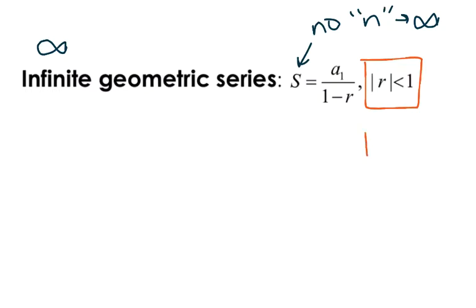So I'm going to tell you, if the absolute value of r, so that means I don't care if it's positive or negative, if that number is not less than 1, then we're going to have no sum. And this is where we get into limits. We're not going to get that specific with it, but you're just going to say there's no sum. You actually can't add the numbers.